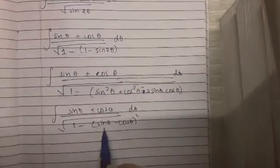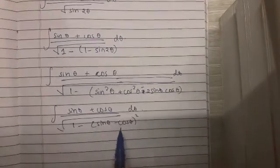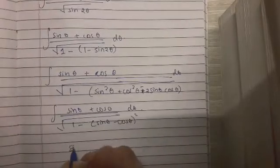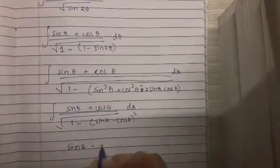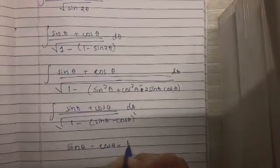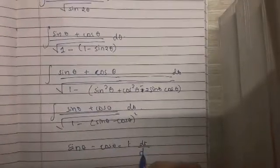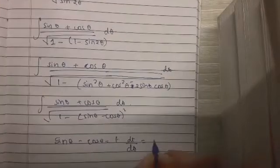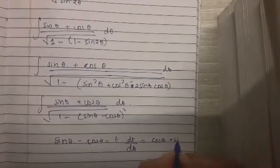So if we keep sin theta minus cos theta as t, then we get the numerator. Sin theta minus cos theta equals to t. So dt by dtheta is equal to cos theta plus sin theta.